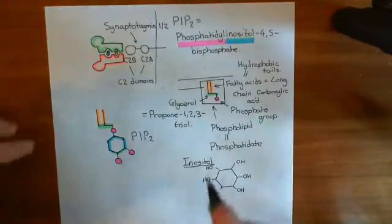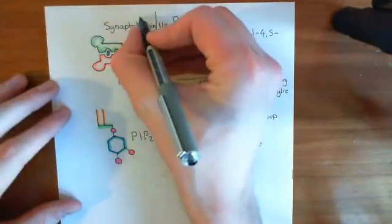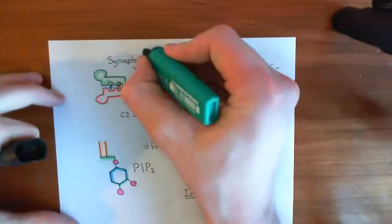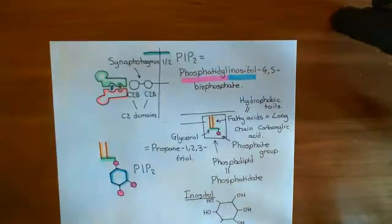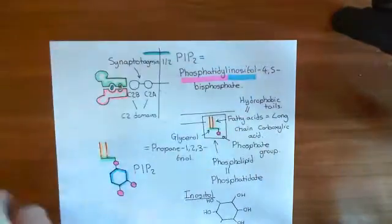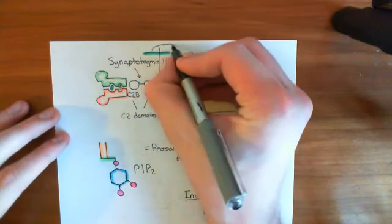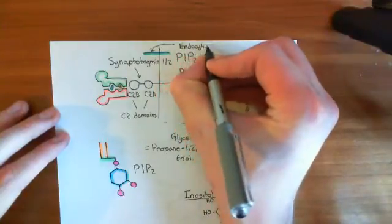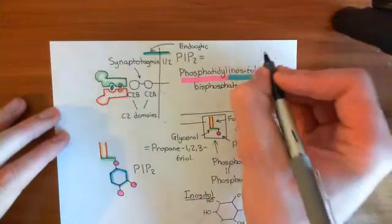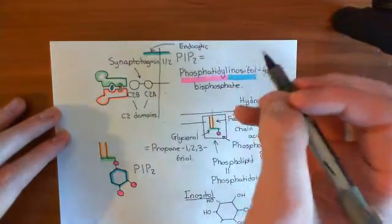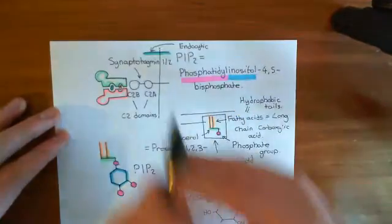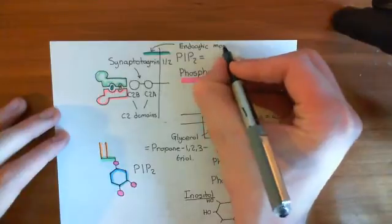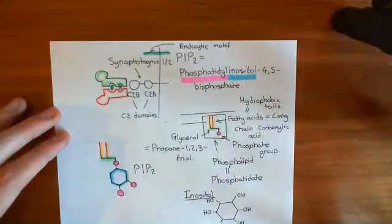When you have a target protein in the plasma membrane — here's our target protein in turquoise — it will have some sort of cytoplasmic endocytic motif visible. That motif is either the asparagine-anything-anything-tyrosine sequence, or the tyrosine-anything-anything-hydrophobic residue sequence.